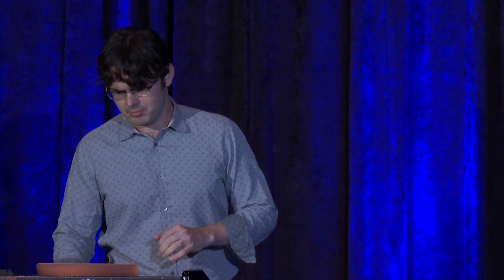There are other kinds of build modes too — you don't have to build all of a program, you can build most of it and have some other program do something with it. Today I'll cover eight build modes, which are all arguments you can pass to the build mode flag on the Go tool. The first three are, from the user's perspective, one build mode — but splitting them out helps us understand that we already use multiple build modes day-to-day.